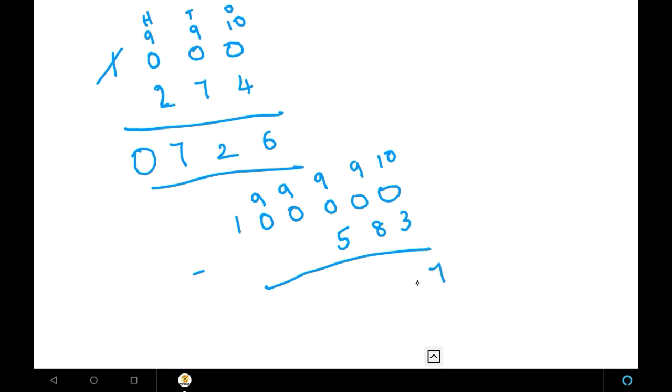So, just subtract. 10 minus 3, you get 7. 9 minus 8, you get 1. 9 minus 5, you get 4. And, the other two numbers it asked is 9 and 9. You can just write 9 and 9. And, the last one will be writing the before number. That will be 0. So, the answer is 99,417.